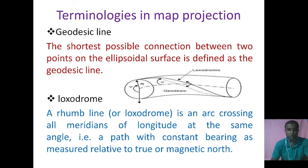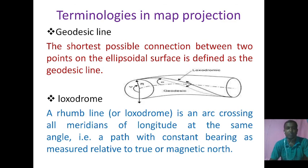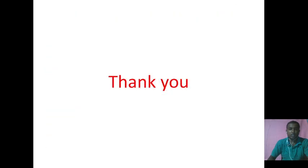Now I am talking about loxodrome, also known as rhumb line. A rhumb line or loxodrome is an arc crossing all meridians of longitude at the same angle — that is, a path with constant bearing as measured relative to true or magnetic north. You can see the rhumb line or loxodrome and geodesic line in the given figure.